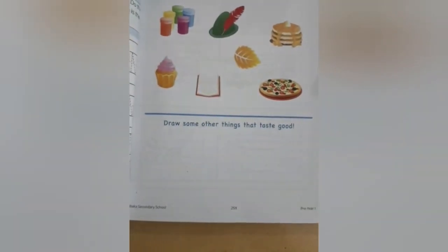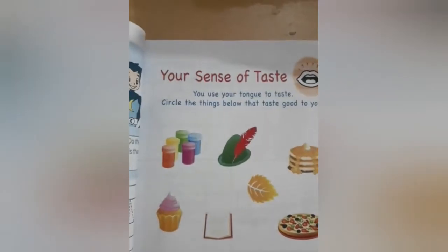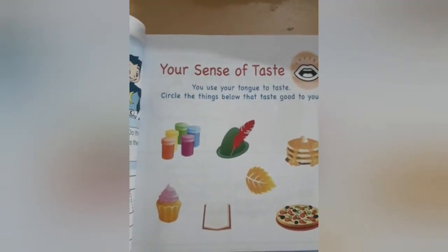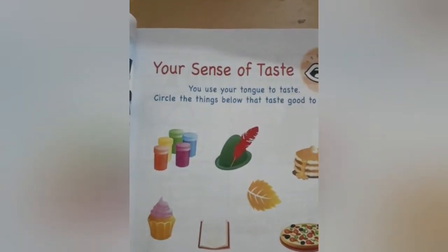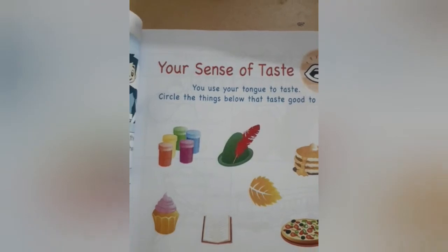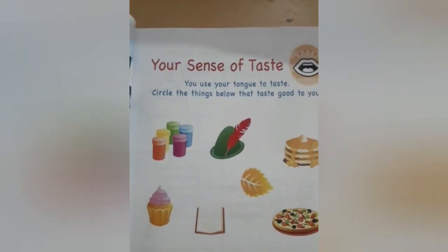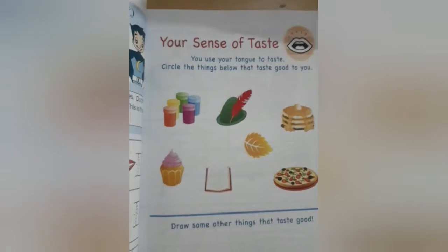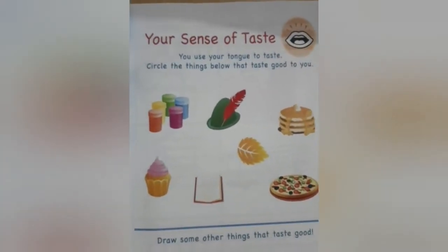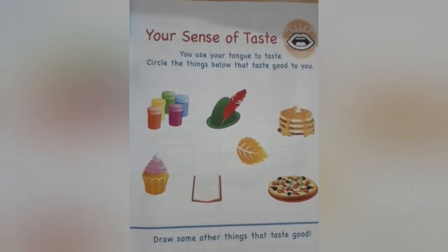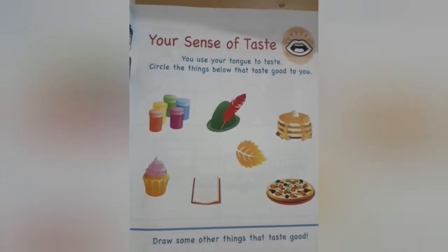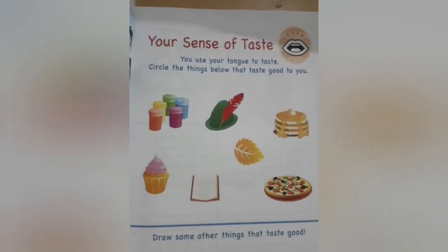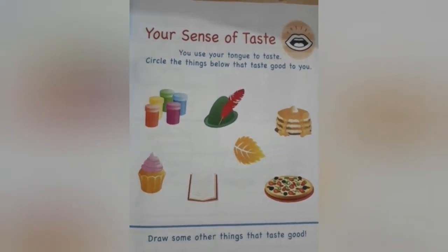Now come to the book. Open page number 259 — Your sense of taste. You use your tongue to taste. Circle the things below that taste good to you. Ab aapne kya karna hai? Aapne un pictures ko circle karna hai jinka taste aap karna chahte hai — means you are eating or tasting. What is the taste of this thing? Sweet, sour.